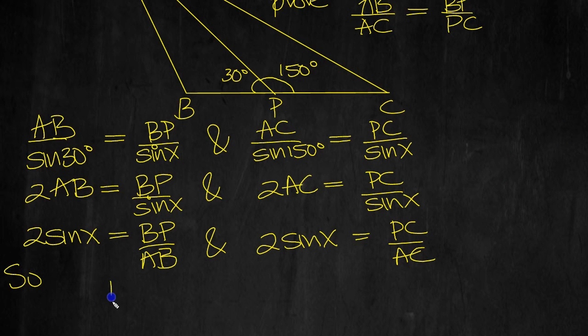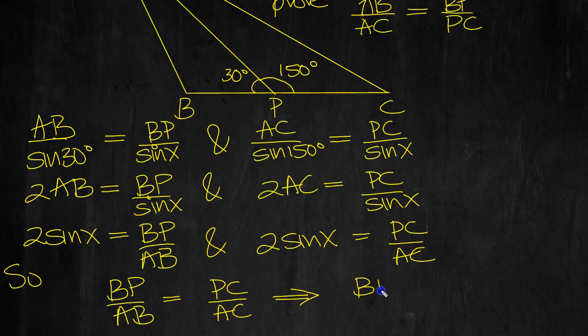BP over AB is equal to PC over AC. The AC is fine, but if we move the AB up there and the PC down there, we can see that. Move this from divide to times, and move this from times down to divide.